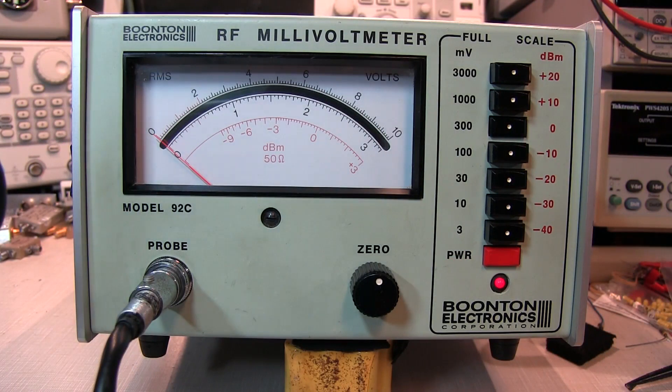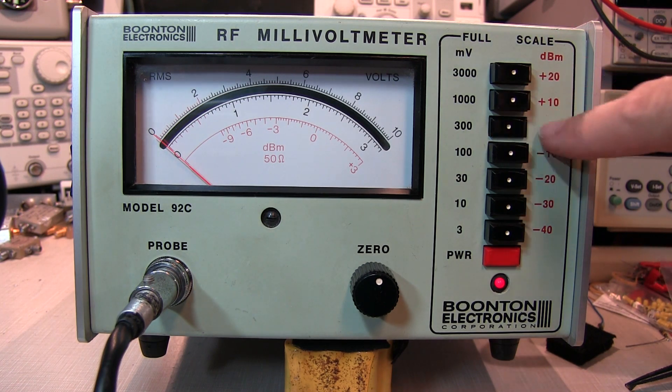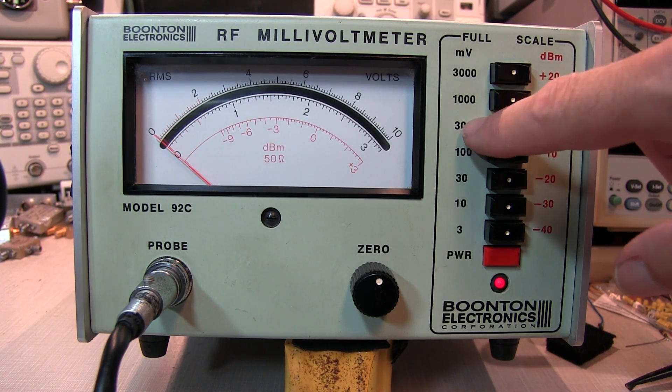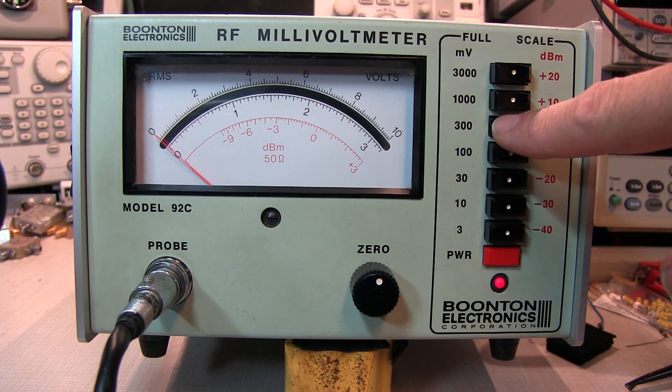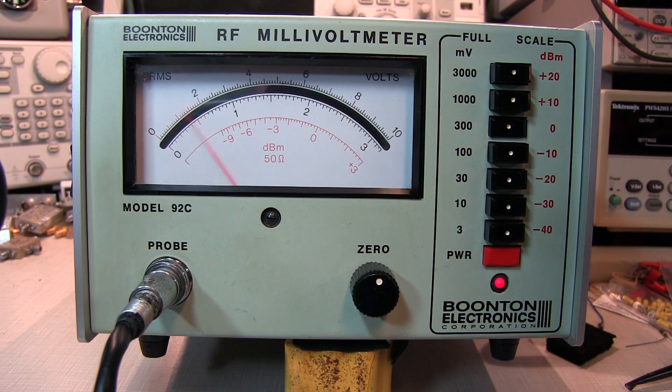Okay, we've got the meter turned on. I've got the 50 ohm adapter put on the end of the probe, and have that connected up to my signal generator up here, which is set to output a signal at 10 megahertz at 0 dBm. So I hit the 0 dBm scale, which is also the 300 millivolt full scale on the meter. Let's turn the signal generator on.